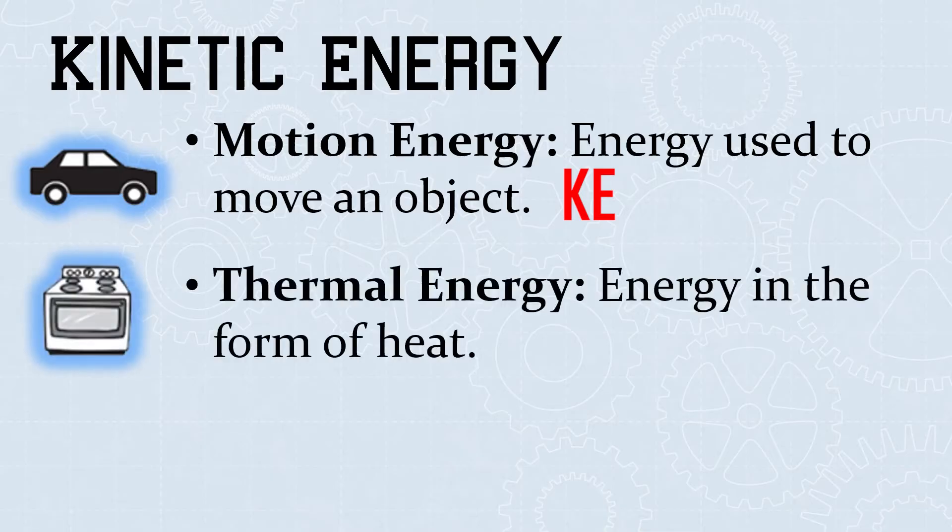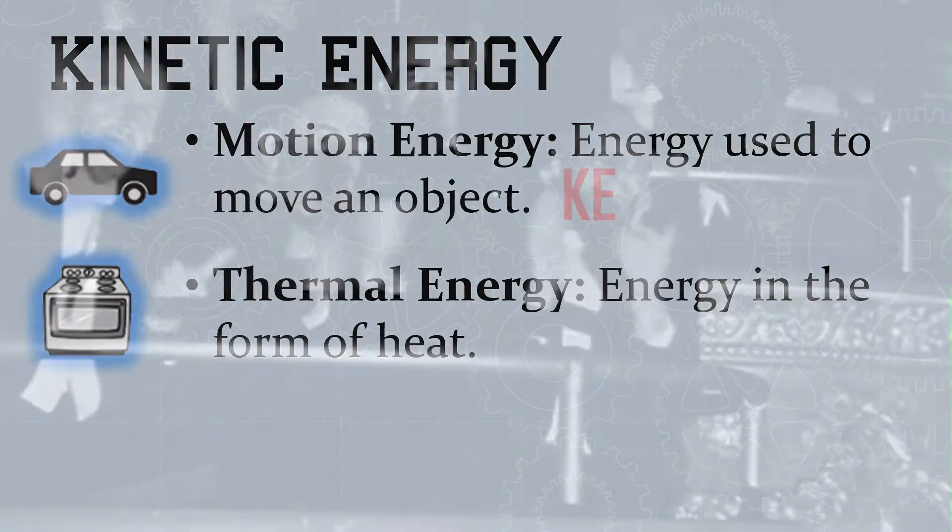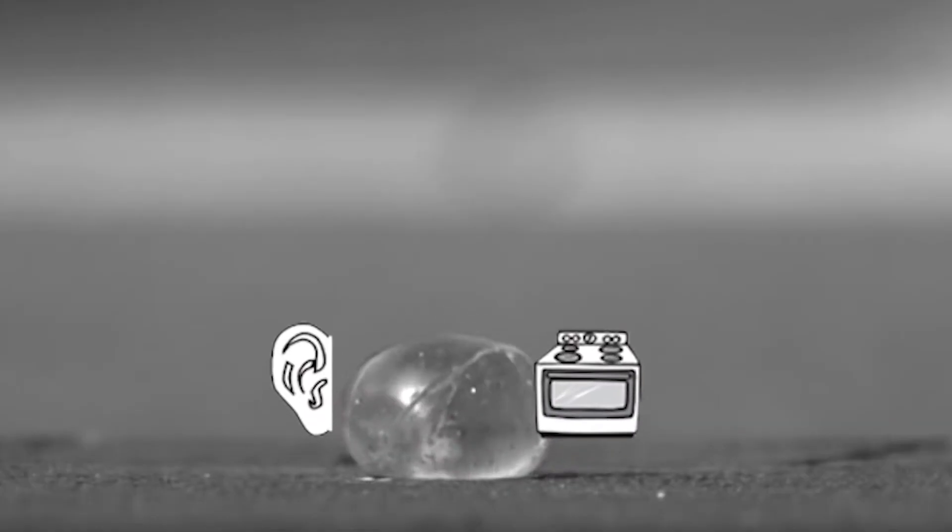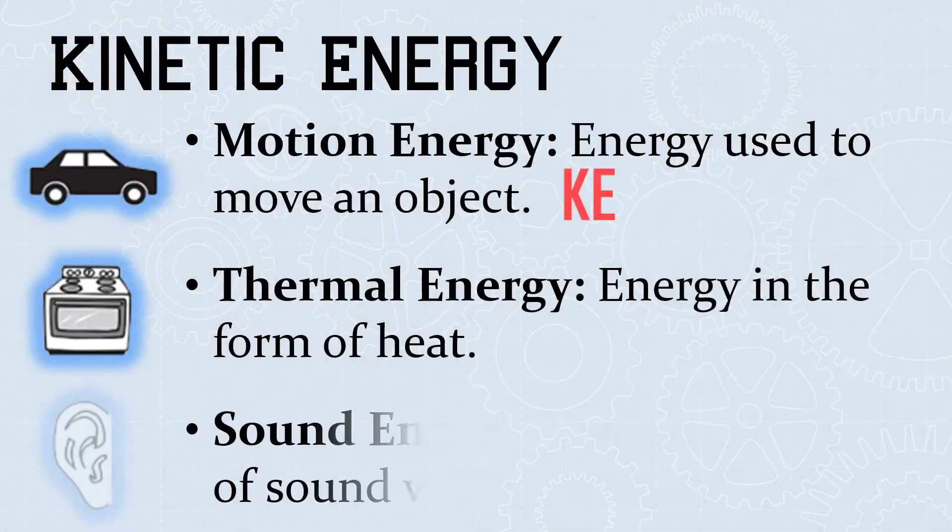The first is thermal energy. This is energy in the form of heat. Collisions and friction create thermal heat. Try clapping your hands together. Eventually, they get warm. Just like when the bouncy ball hits the surface, the surface becomes warm. The reason you can hear your hands when they clap is because you're releasing sound energy.